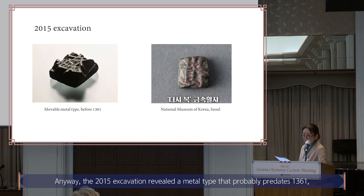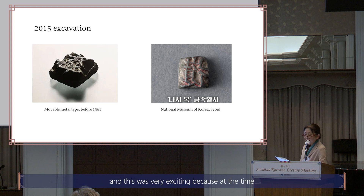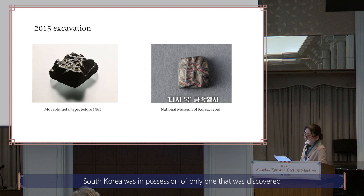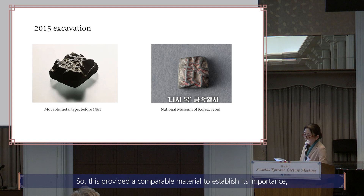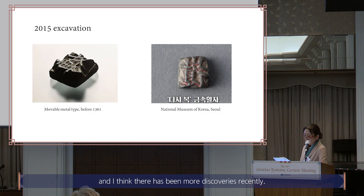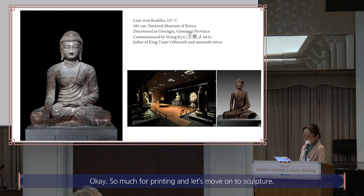The 2015 excavation revealed a metal type that probably predates 1361. This was very exciting because at the time South Korea was in possession of only one that was discovered from a private tomb in Kaesong, now kept at the National Museum of Korea. This provided a comparable material to establish its importance.